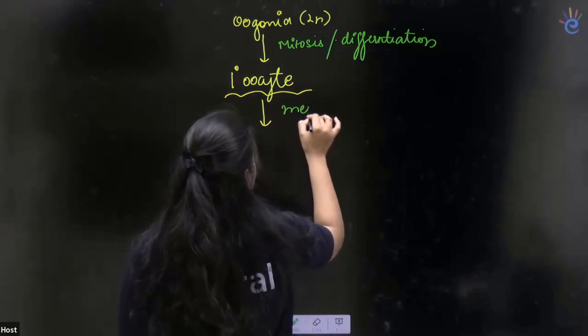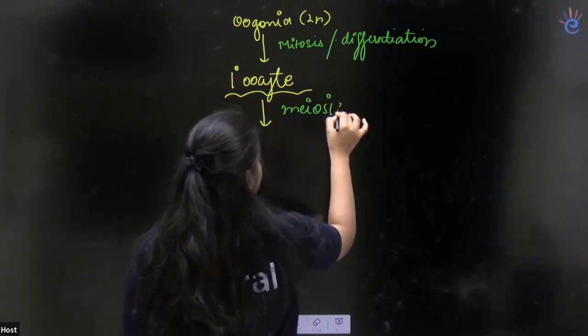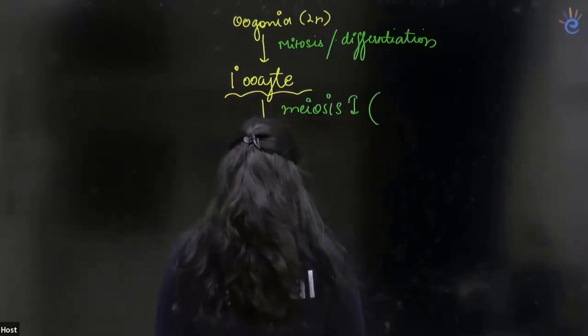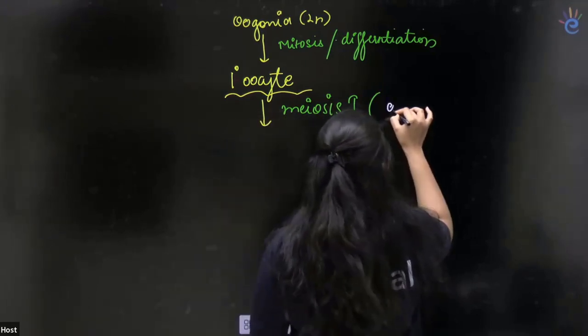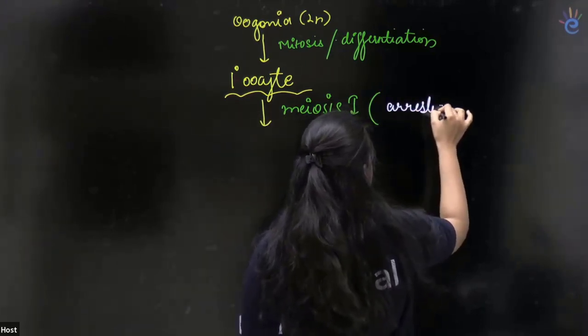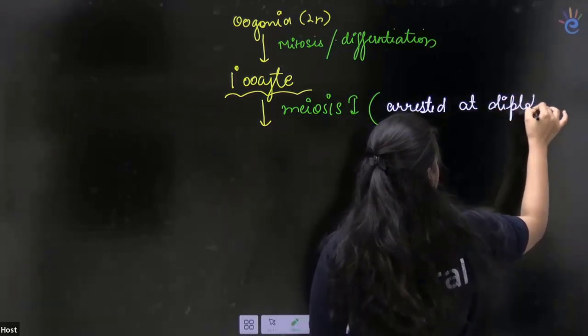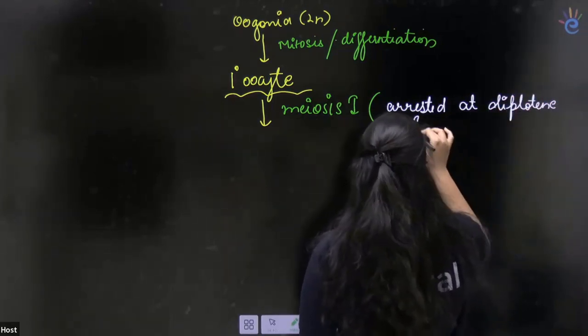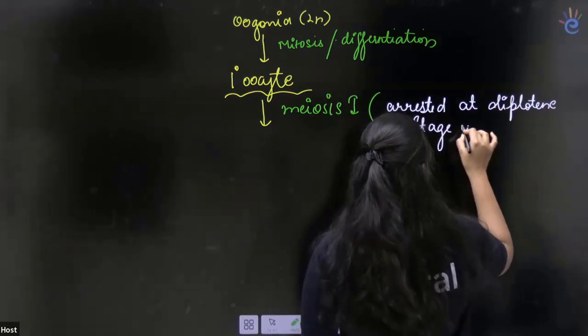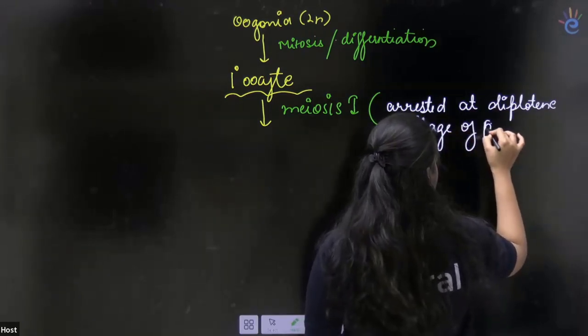Meiosis 1 started. But what happened? It gets arrested at the diplotene stage of prophase 1.